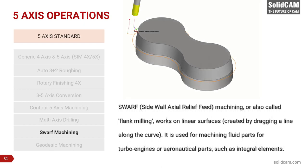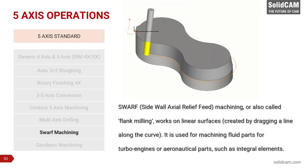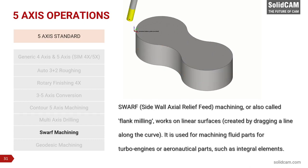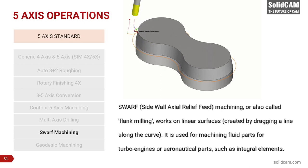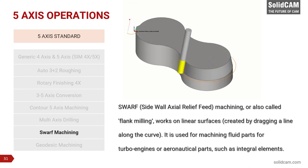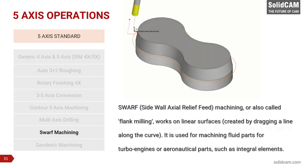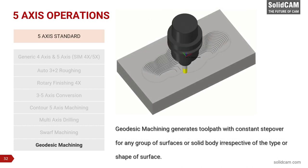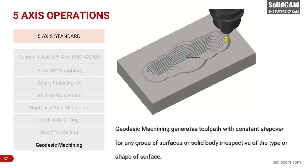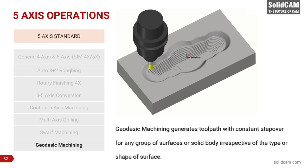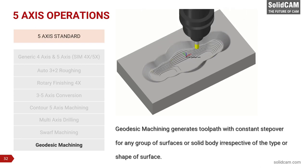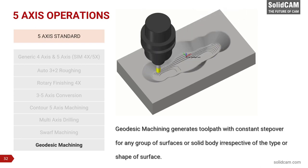4 SWARF, or Sidewall Axial Relief Feed Machining — also known as flank milling — works on linear surfaces and creates toolpaths by dragging a line along a curve. It is used for machining fluid parts for turbo engines as well as aeronautical parts. Geodesic Machining generates toolpaths with constant step-over for any group of surfaces or solid body, regardless of the type or shape of the surface.